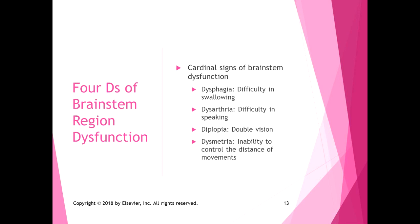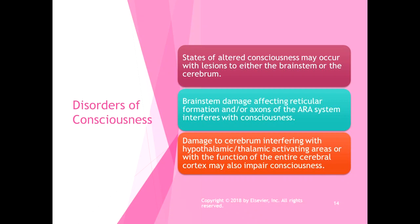States of altered consciousness may occur with lesions to either the brainstem or the cerebrum, because of all the vital functions the brainstem controls. Brainstem damage affecting the reticular formation or ARAS axons interferes with consciousness — sometimes trauma causing a coma is due to brainstem damage. Damage to the cerebrum interfering with hypothalamic or thalamic activating areas, or with the function of the entire cerebral cortex, may also impair consciousness.